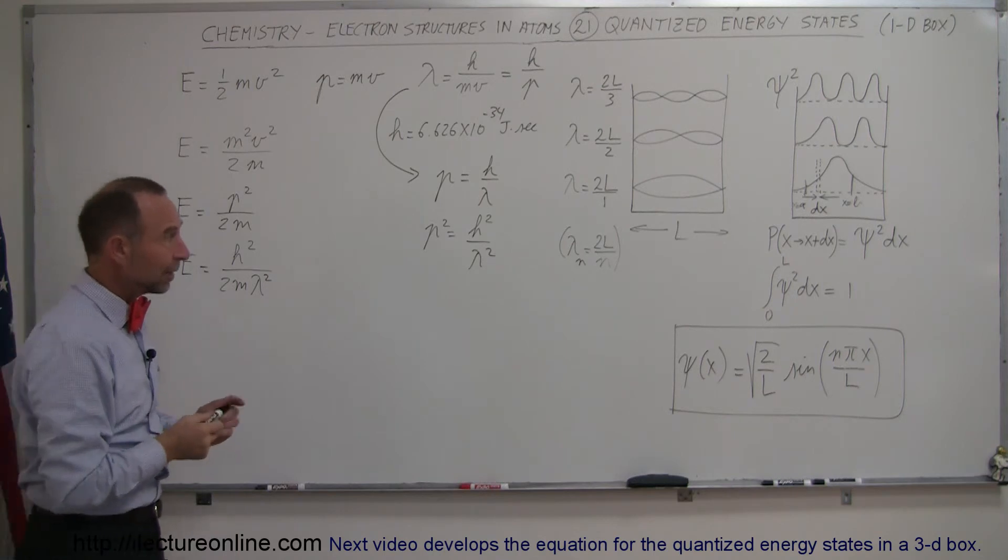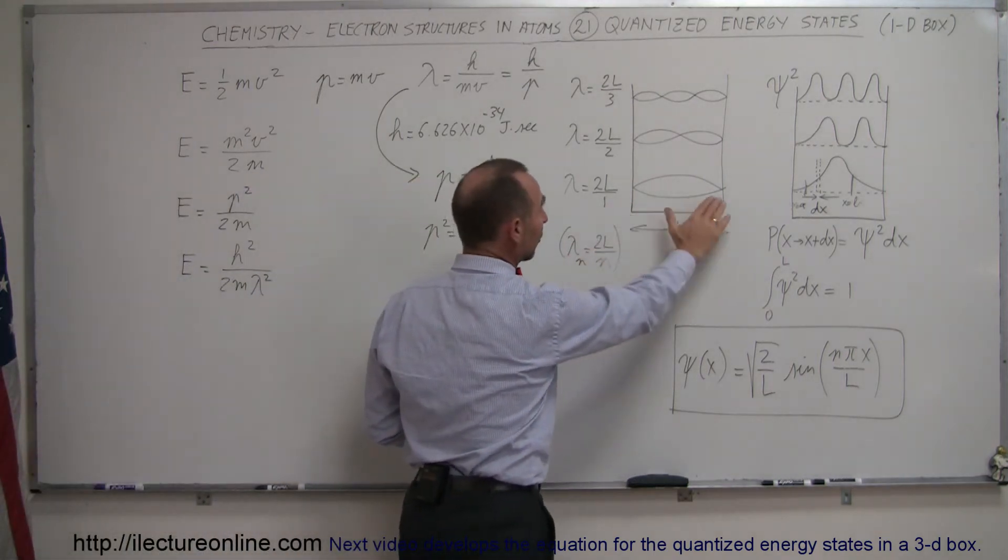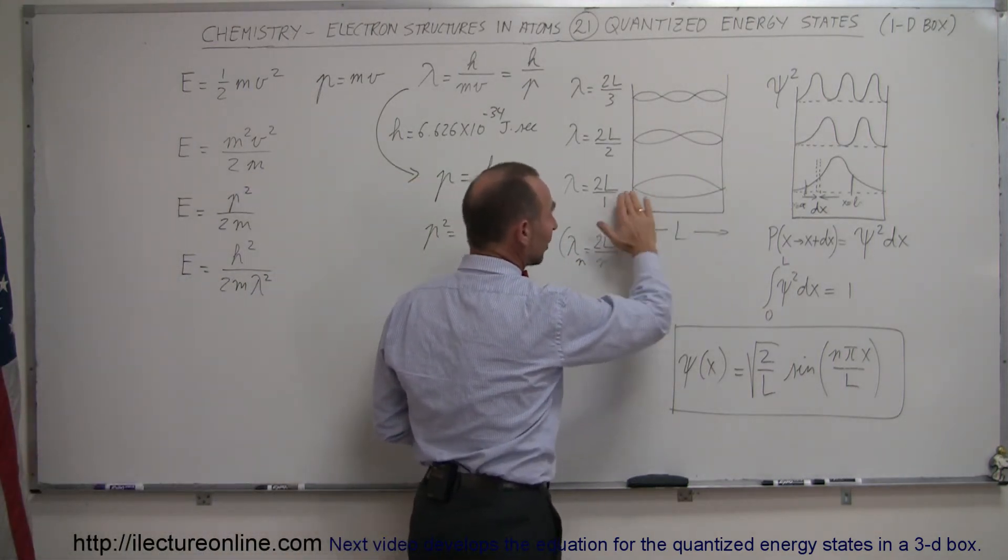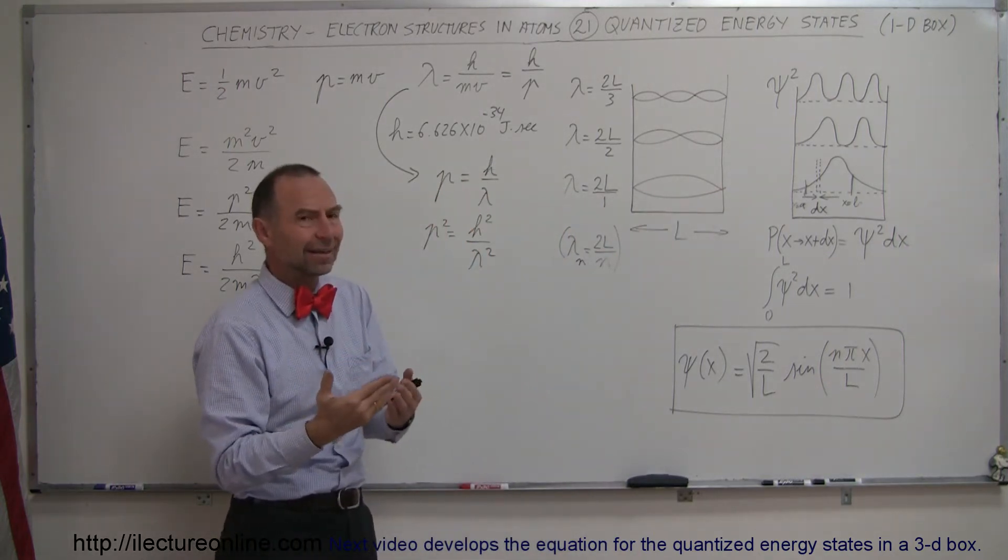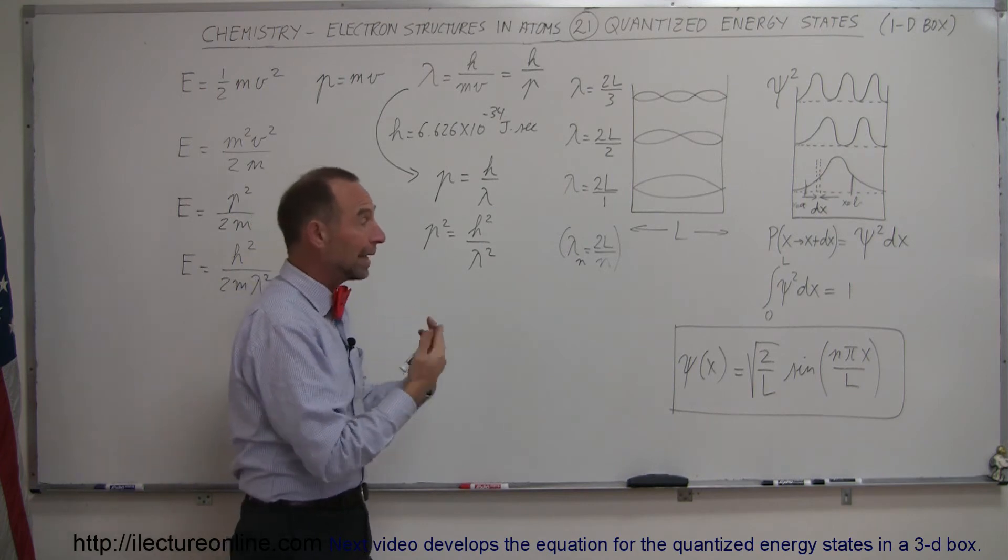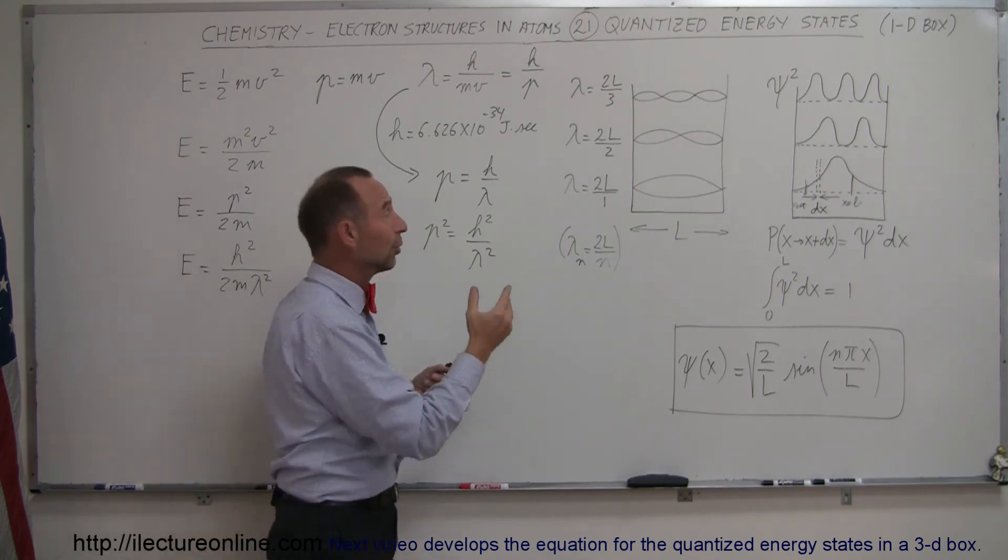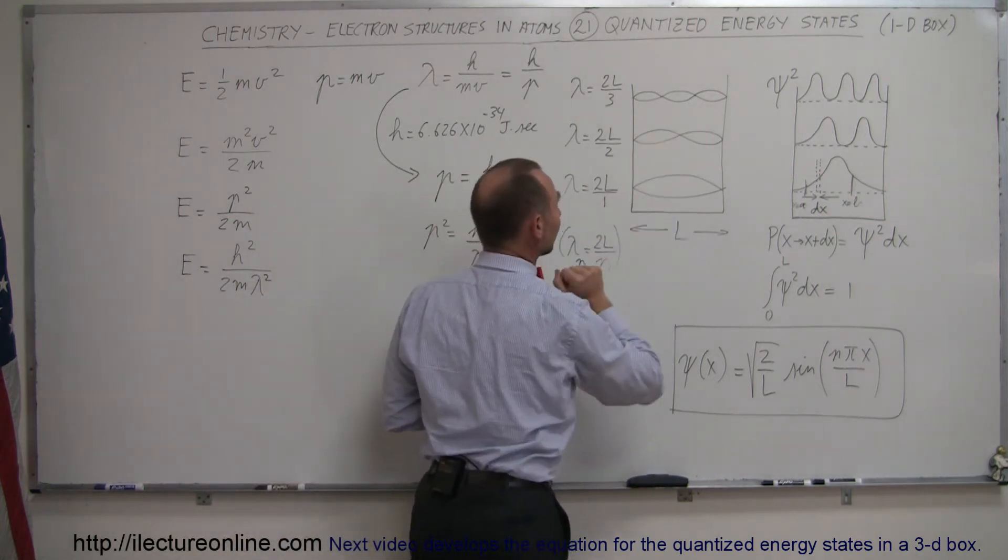Next, I realized that since a particle behaves like a wave, and a particle is back and forth inside a one-dimensional box like this, it can only have certain types of wave patterns for it to exist. That's why electrons are, the energy levels of electrons are quantized. They can only exist in certain wave patterns.